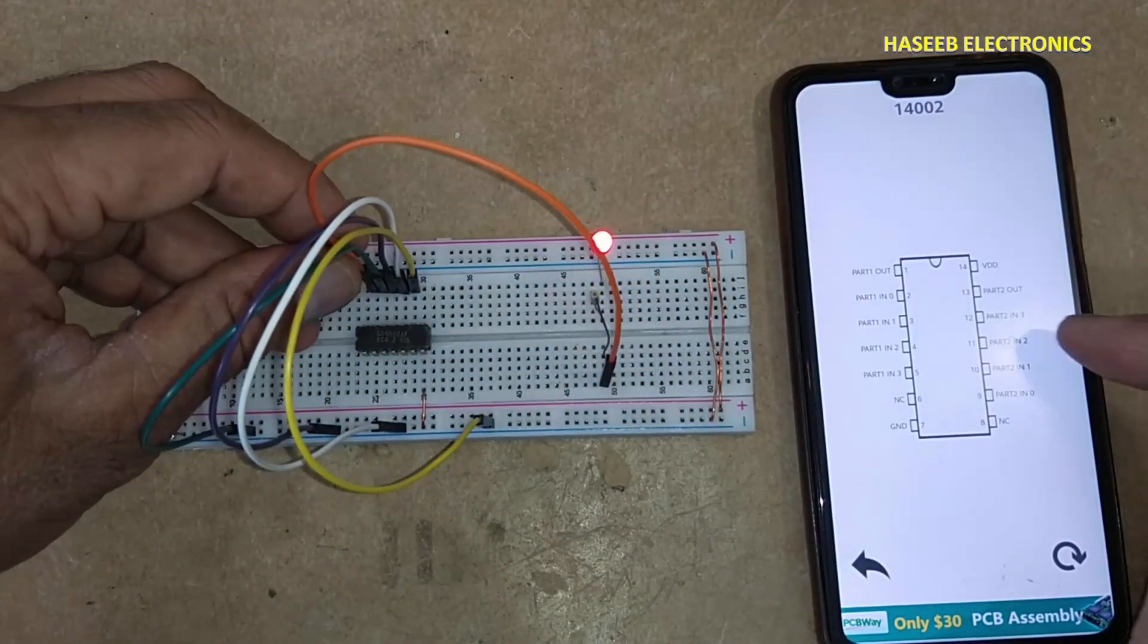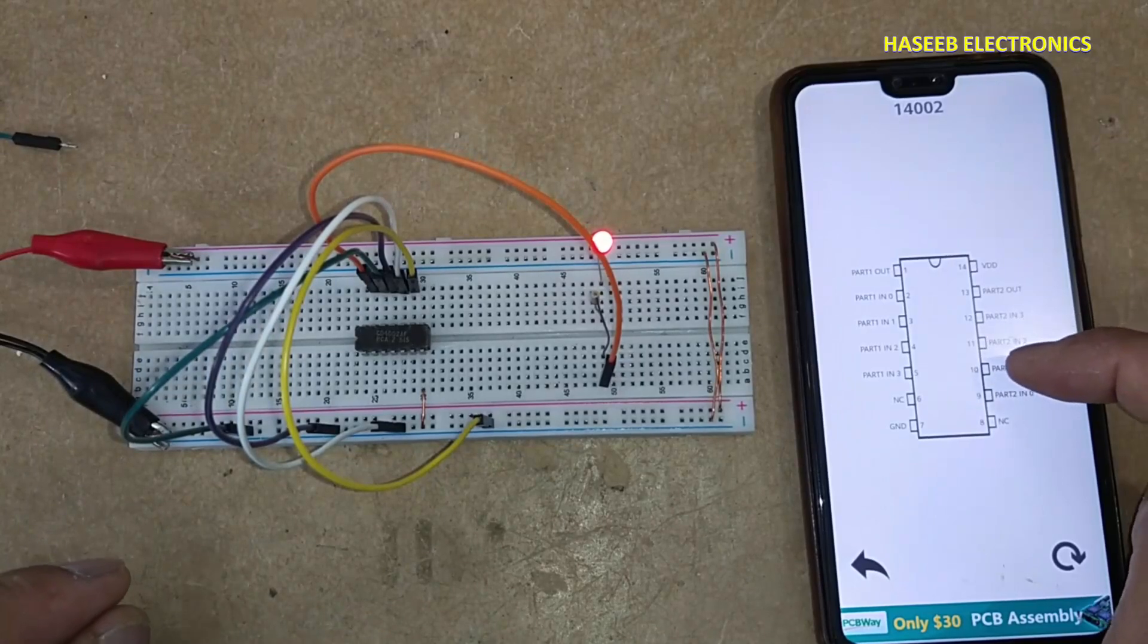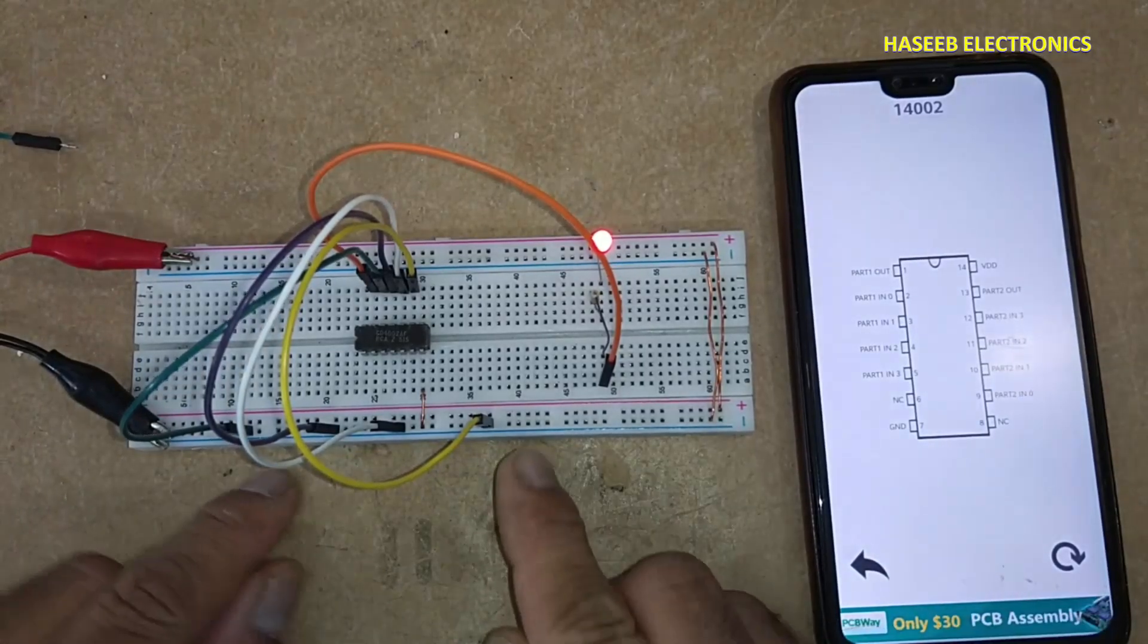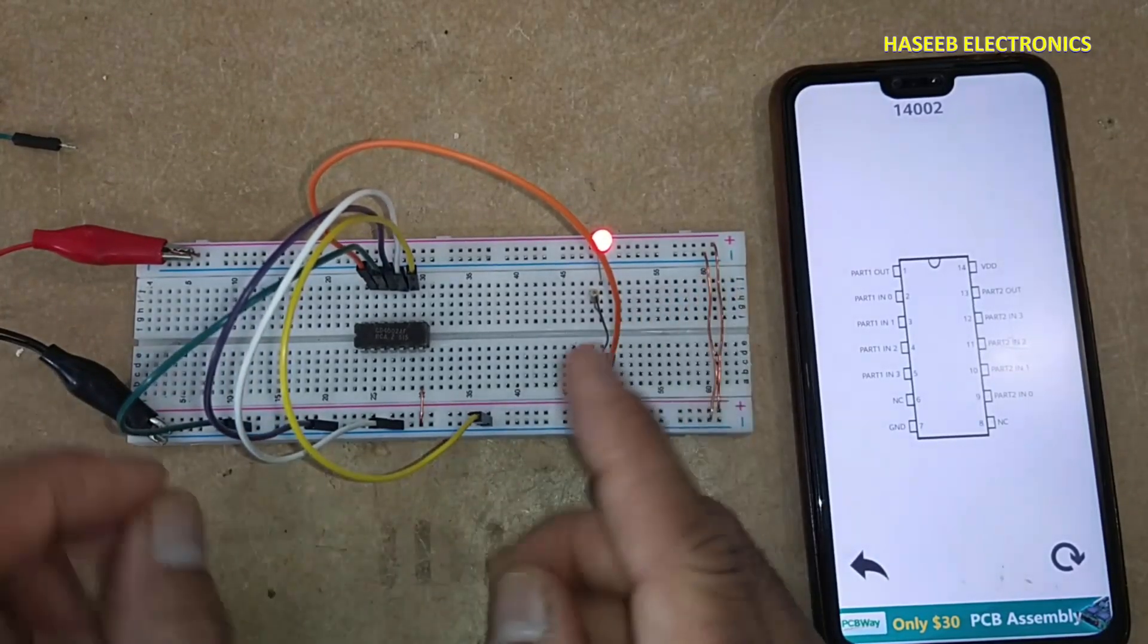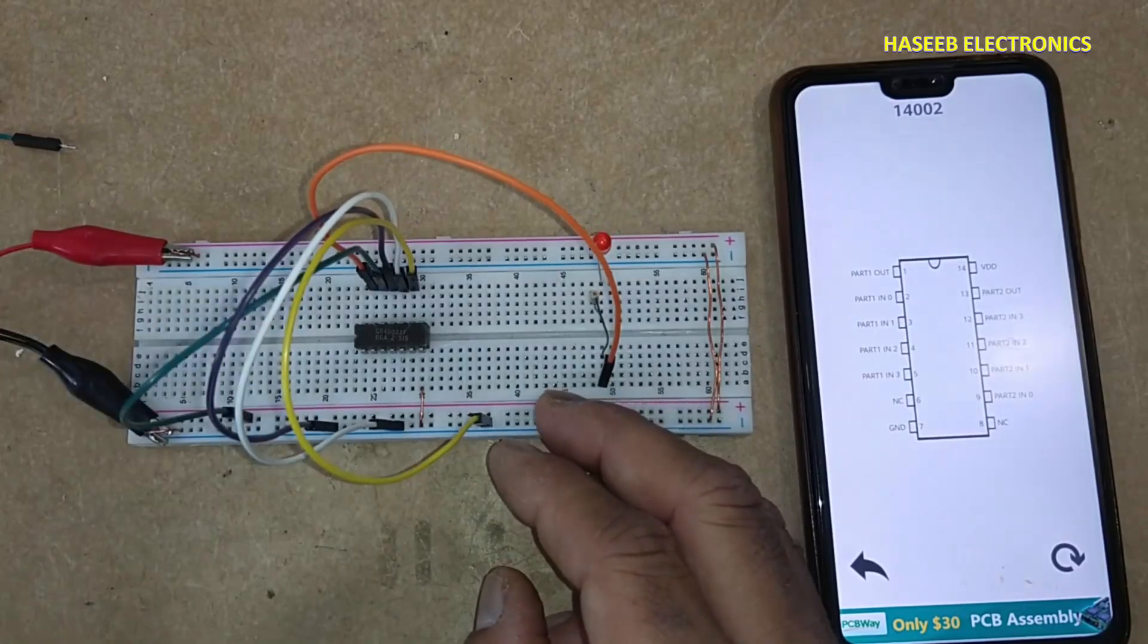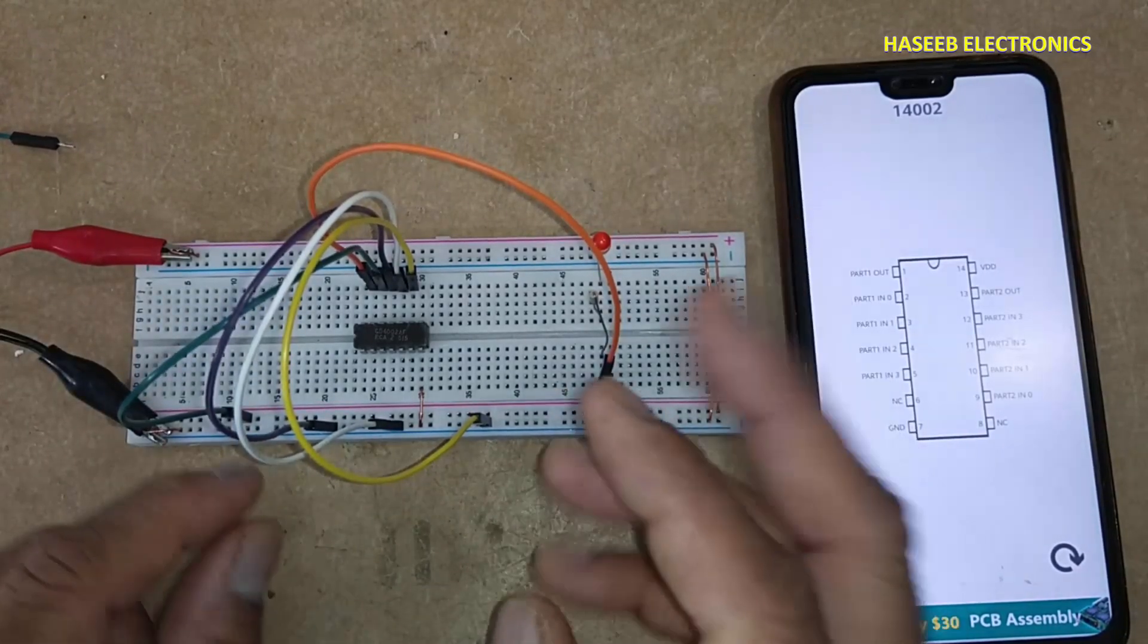Pin 13 is output. Pins 12, 11, 10, and 9 are inputs. All inputs low, output high. If any input becomes high, output becomes low.